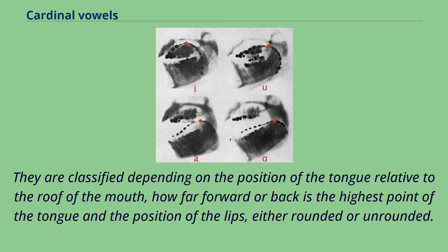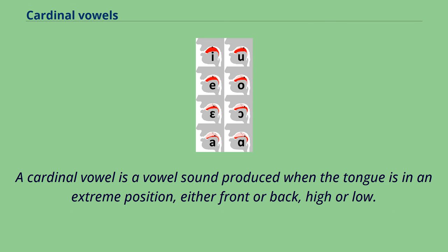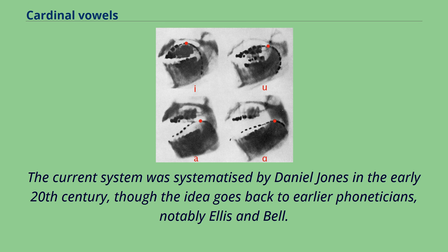They are classified depending on the position of the tongue relative to the roof of the mouth — how far forward or back is the highest point of the tongue — and the position of the lips, either rounded or unrounded. A cardinal vowel is a vowel sound produced when the tongue is in an extreme position, either front or back, high or low.